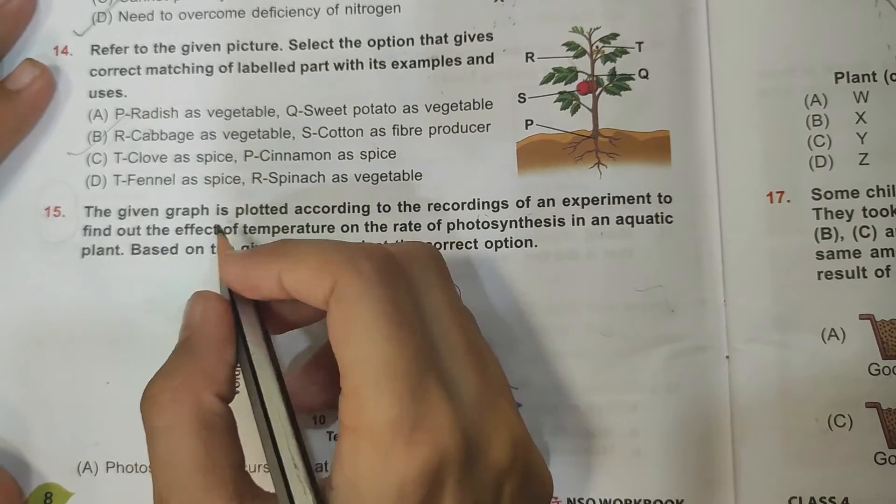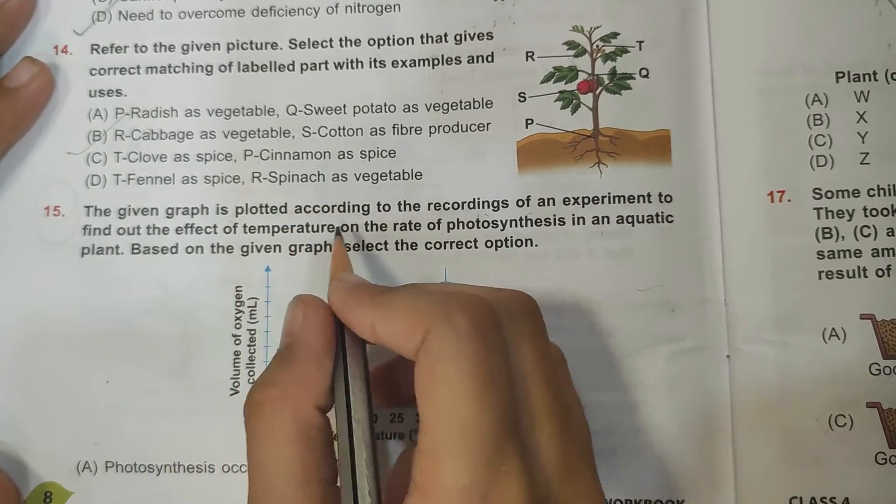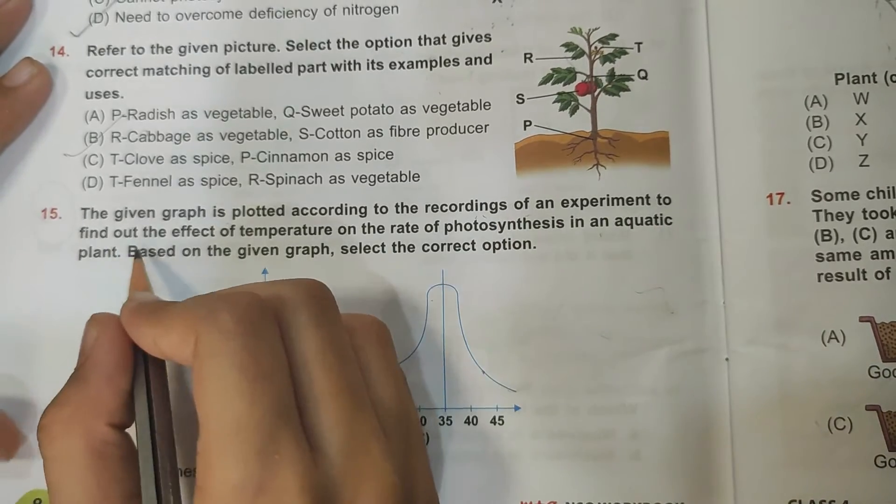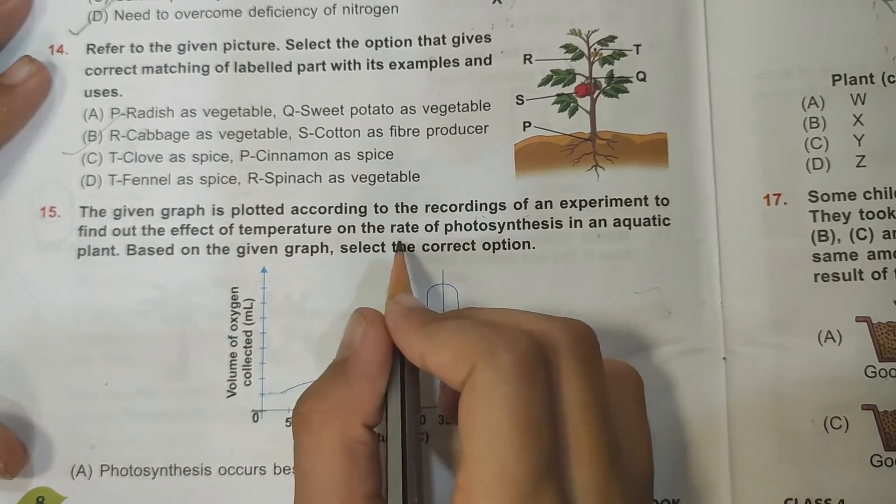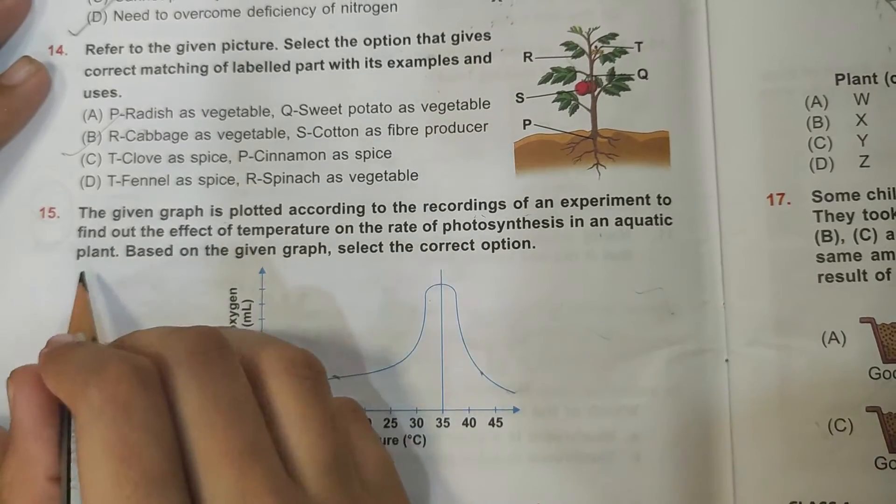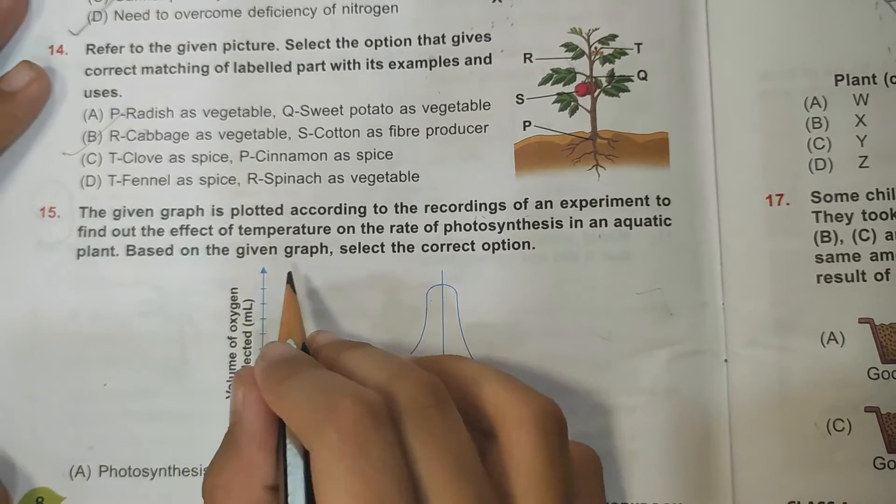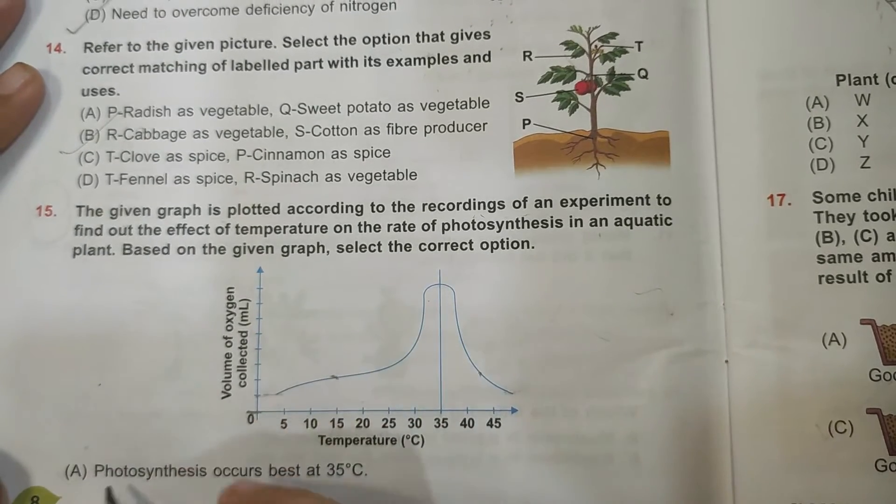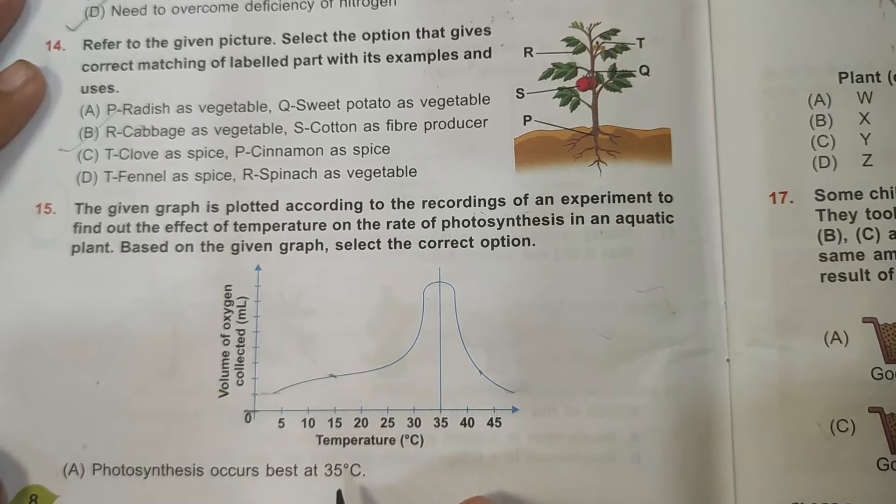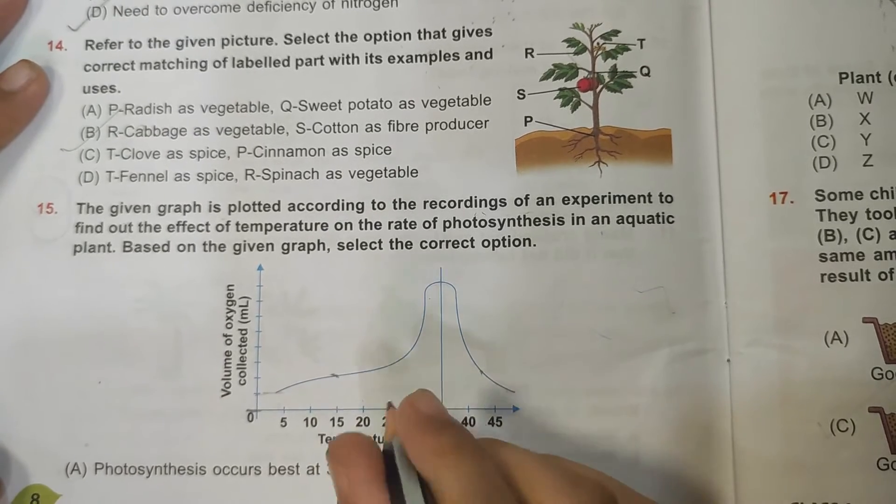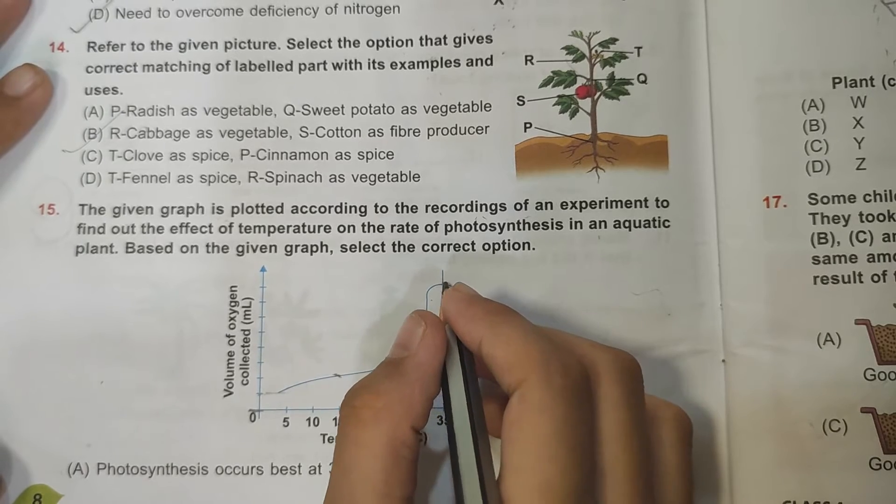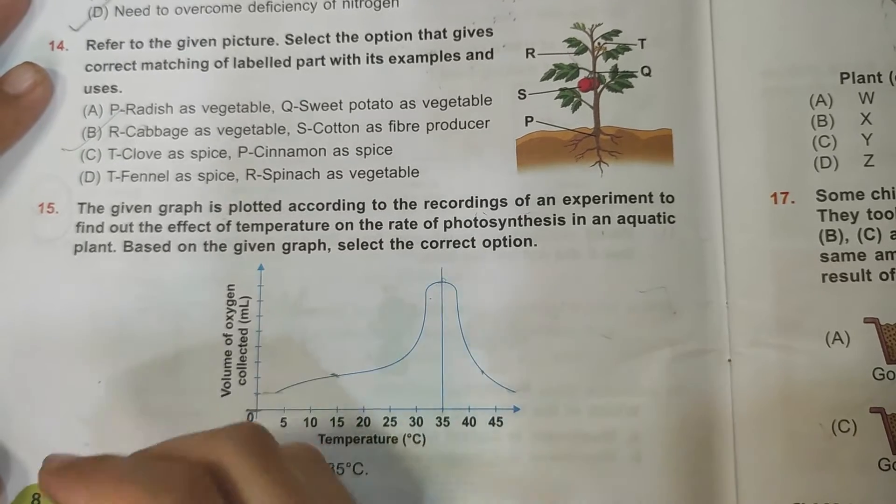The given graph is plotted according to the recordings of an experiment to find out effect of temperature on the rate of photosynthesis in an aquatic plant. Based on the given graph, select the correct option. Photosynthesis occurs best at 35 degrees Celsius - at 35 degrees Celsius the photosynthesis is best occurring, so A is the correct answer.